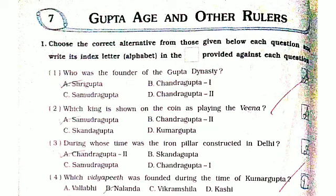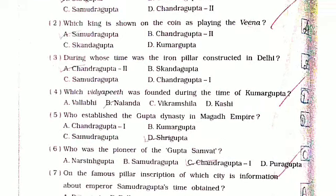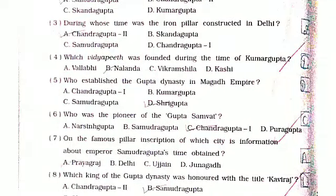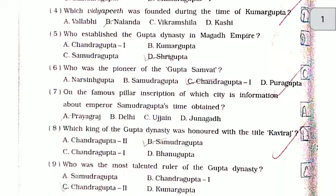Who was the founder of the Gupta dynasty? Shri Gupta. Which king is shown on the coin as playing the veena? Samudra Gupta. During whose time was the iron pillar constructed in Delhi? Chandragupta 2. Which vidya pit was founded during the time of Kumar Gupta? Nalanda.